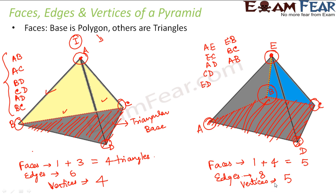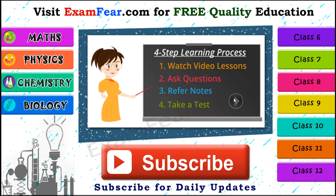Both are pyramids — the first with a triangular base, the second with a quadrilateral base. As the number of sides in the base changes, the number of faces, edges, and vertices also changes because the entire structure changes. This gives you a better idea of how to find faces, edges, and vertices in any three-dimensional shape. Please visit exampeer.com for free quality education with video lessons, questions, notes, and free online tests. We have content for class 6 to 12 covering physics, chemistry, mathematics, and biology. Please subscribe to our channel for daily updates.